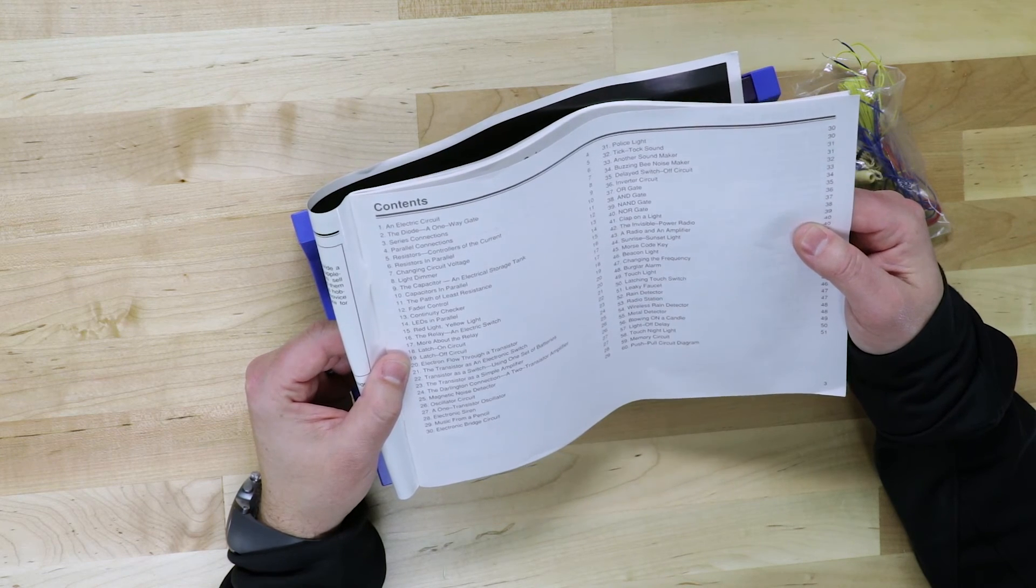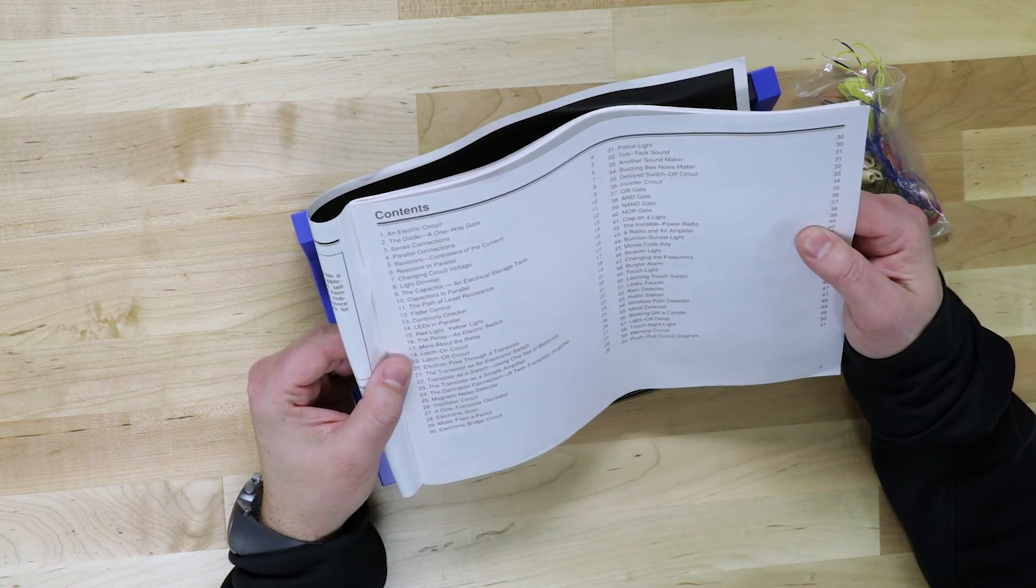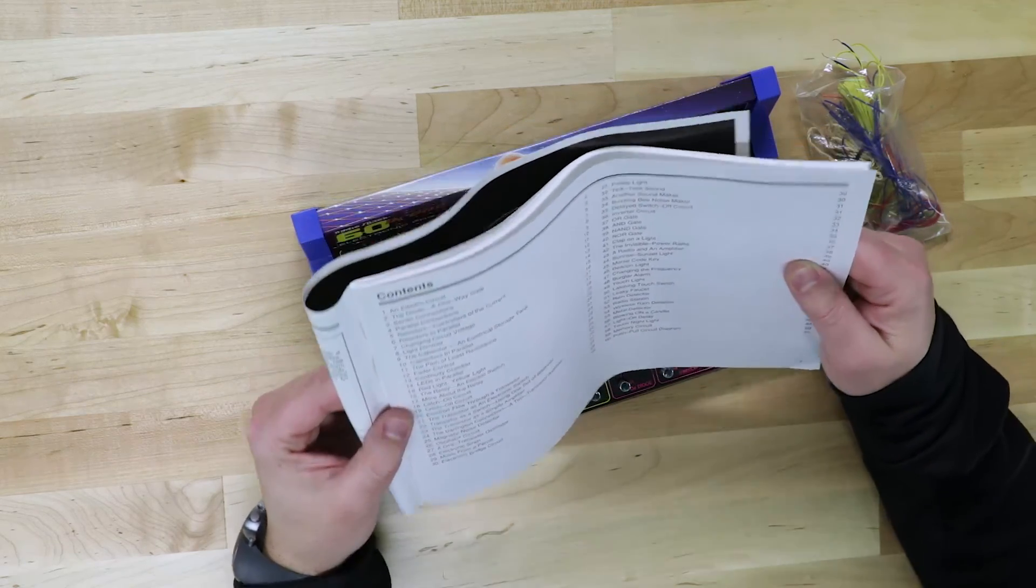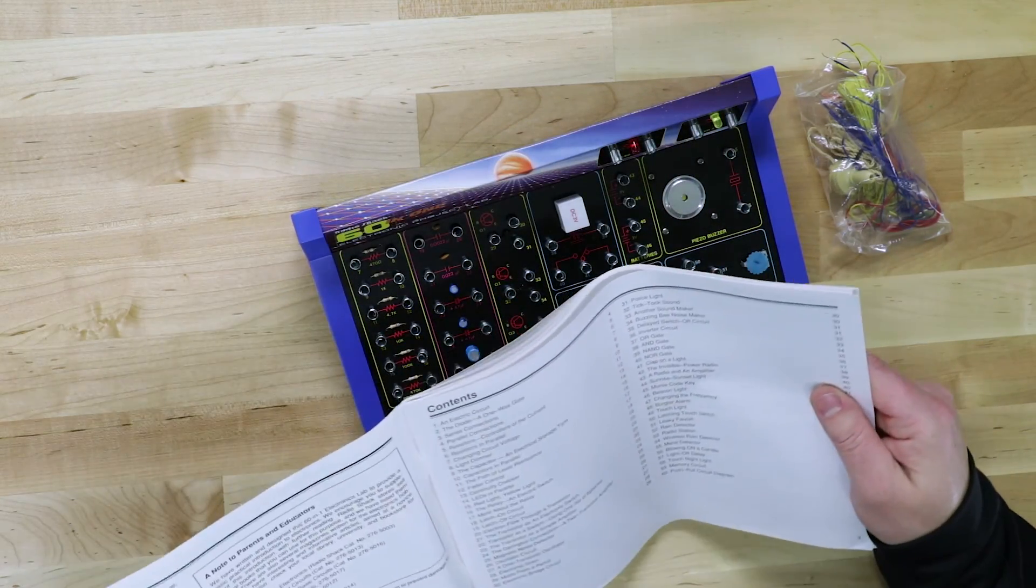lots of cool things that you can build. And they are very simple, tick tock sound, a police light. So there's lots of simple things that you can build here.